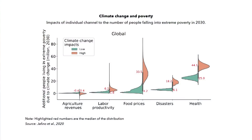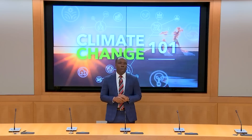The World Bank estimates that more than 100 million additional people might be pushed into extreme poverty by 2030 due to climate change. Even on the best-case low-impact scenario, the outcomes would still be severe — up to 38 million additional people would experience abject poverty. Rising food prices, widespread vector-borne diseases, and increasing frequency of disasters are some of the channels through which climate change increases poverty.